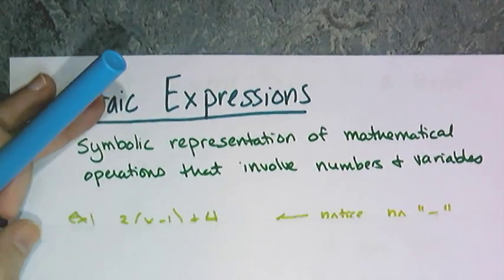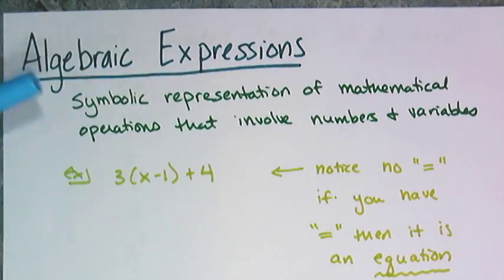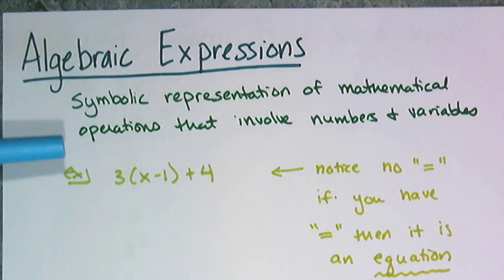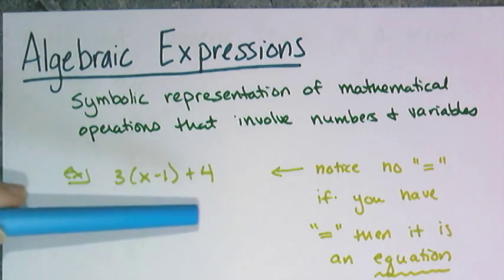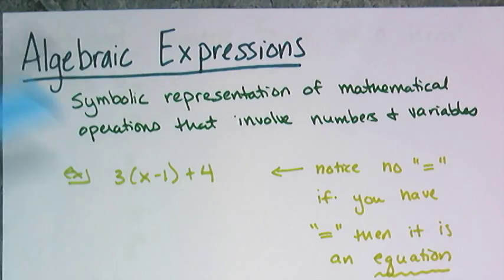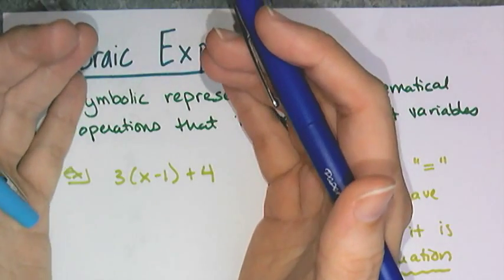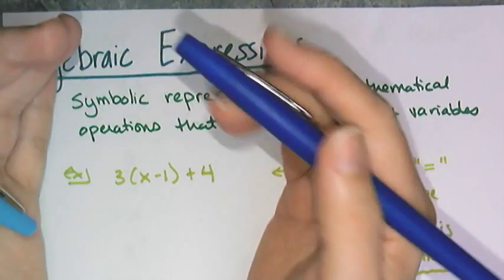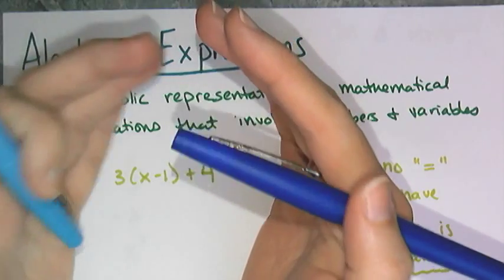So here's an example of an algebraic expression: three times the quantity X minus one plus four. Whenever you see parentheses in an algebraic expression, the thing in parentheses is read as the quantity. You don't say three open parentheses X minus one closed parentheses. You say three times the quantity of X minus one.